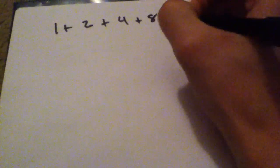Hey guys, there has been a lot of controversy on MinutePhysics' adding past infinity video. I'm going to show you how 1 plus 2 plus 4 plus 8 plus 16, all the way to infinity, does equal negative 1.